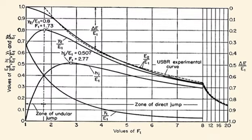For critical flow, F sub 1 equal 1, it is confirmed that Y sub 1 over E sub 1 is equal to Y sub 2 over E sub 1 equal 0.67 equal two-thirds.